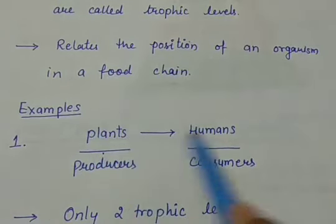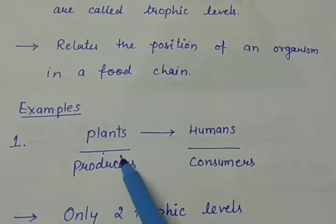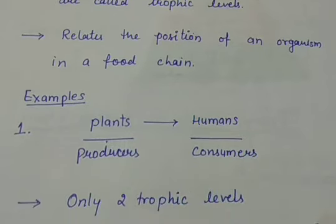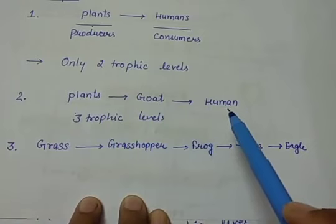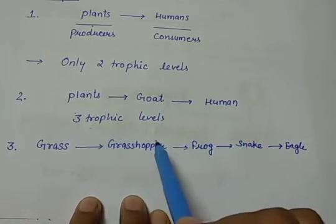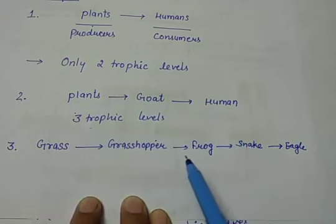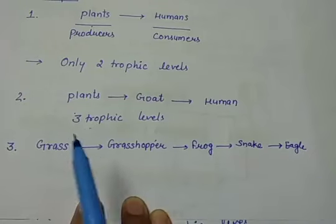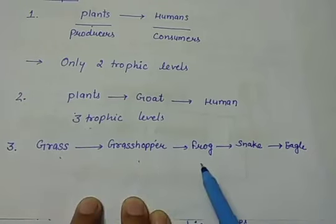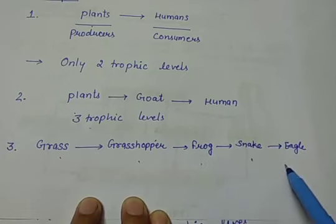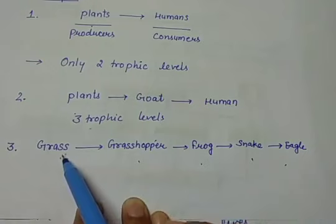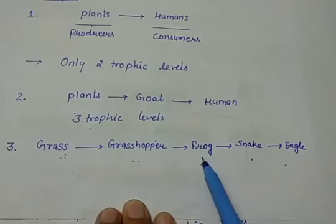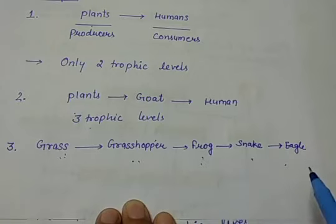Trophic level basically relates the position of an organism in a food chain. For example, plants eaten by humans: plants are producers at first trophic level, humans are consumers at second trophic level. When plants are eaten by goat and goat by human, we have three trophic levels. In the chain grass-grasshopper-frog-snake-eagle: grass is at first, grasshopper at second, frog at third, snake at fourth, and eagle is at fifth trophic level.